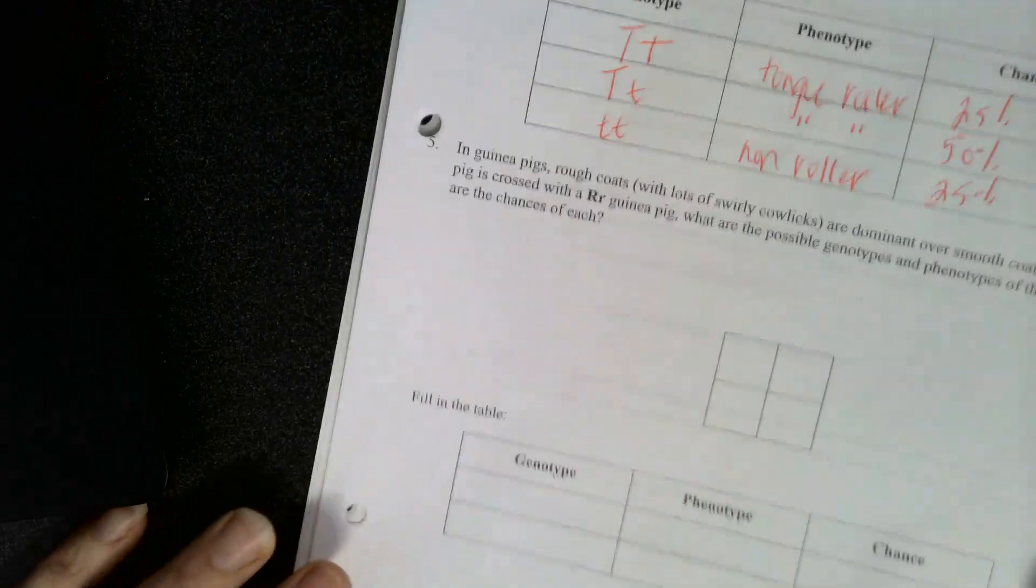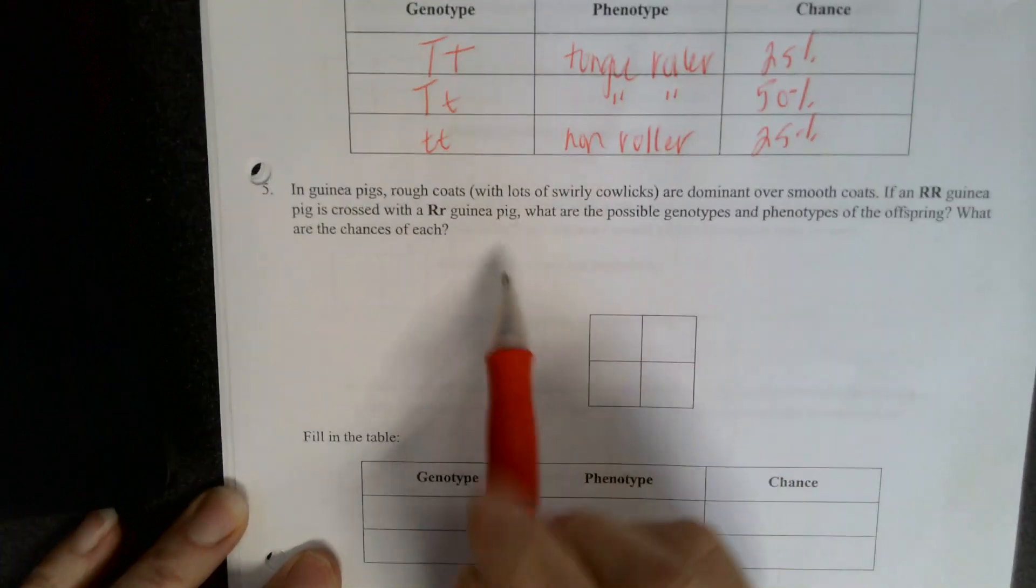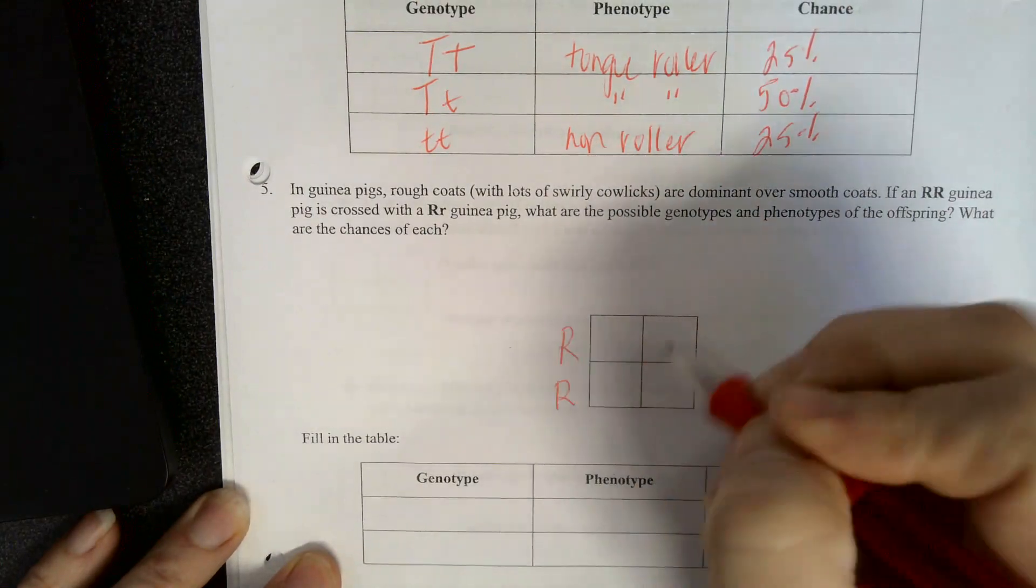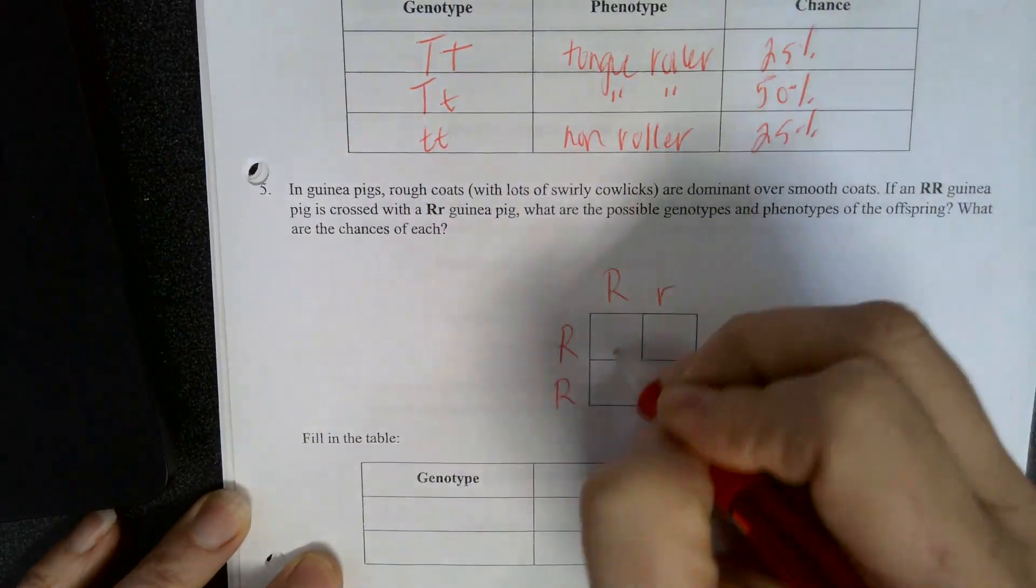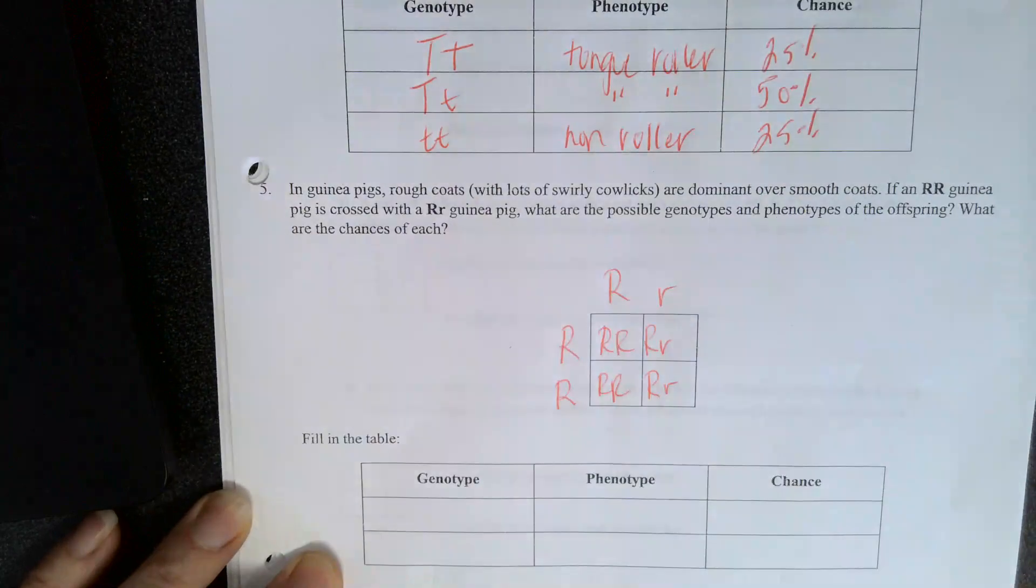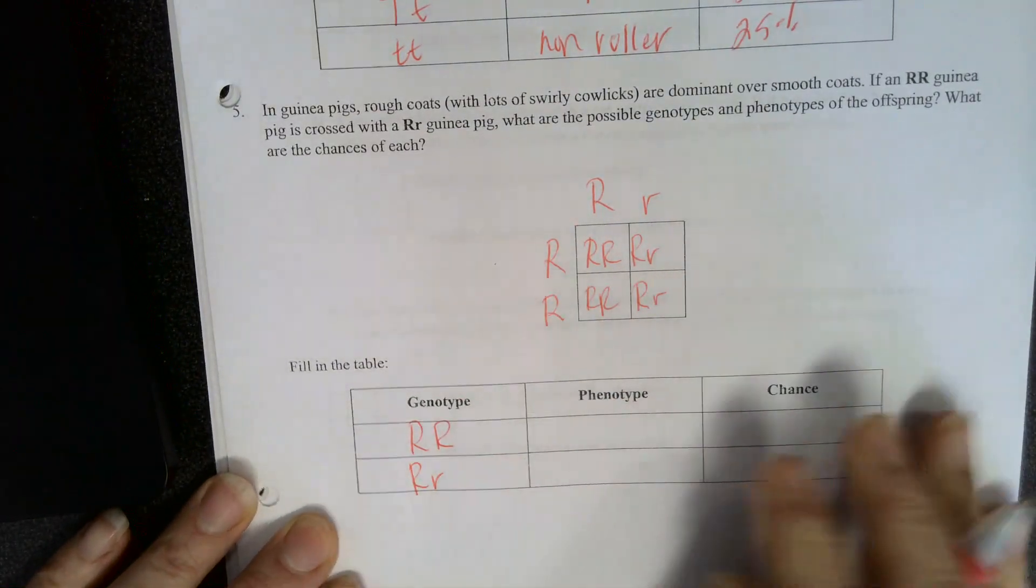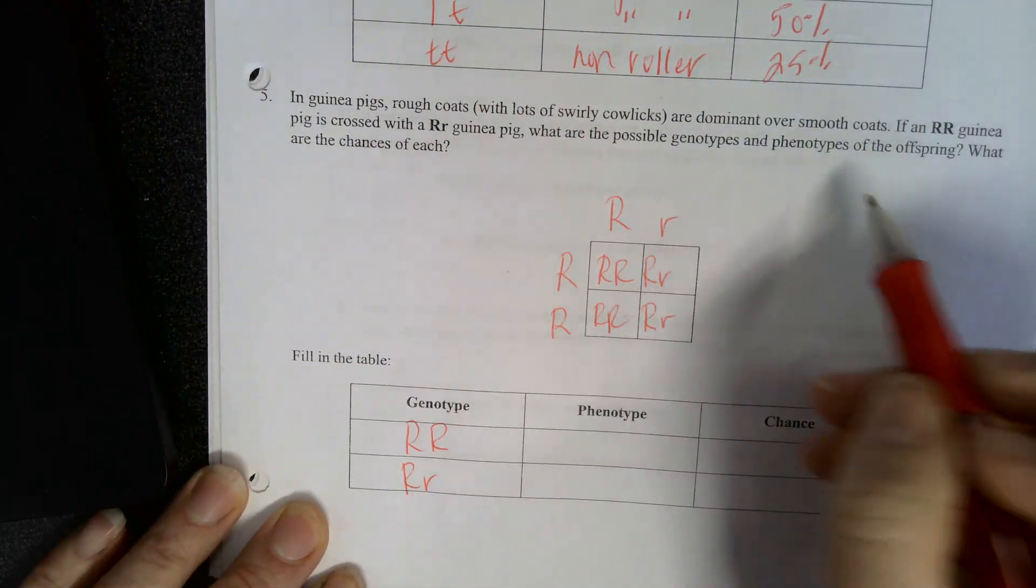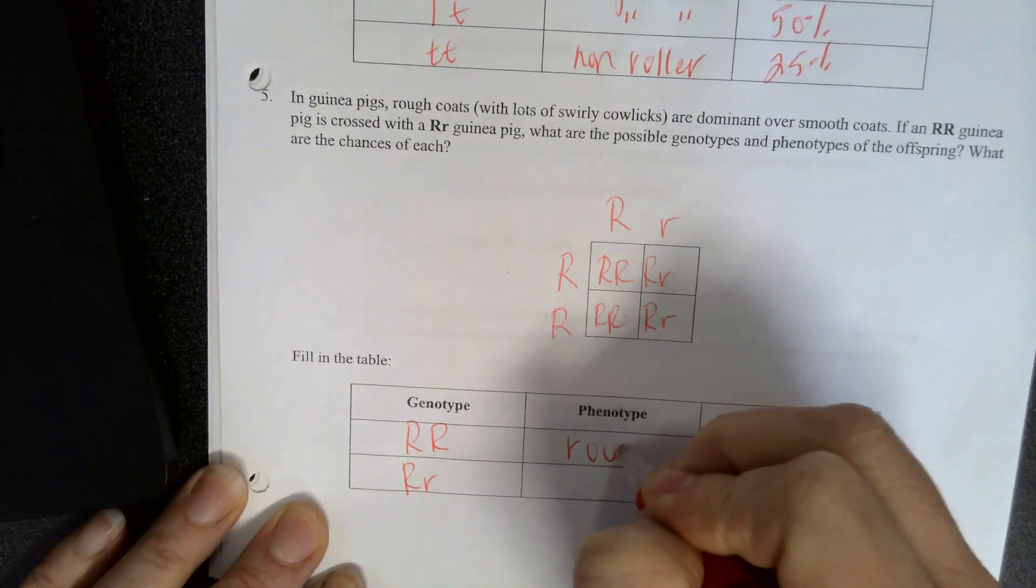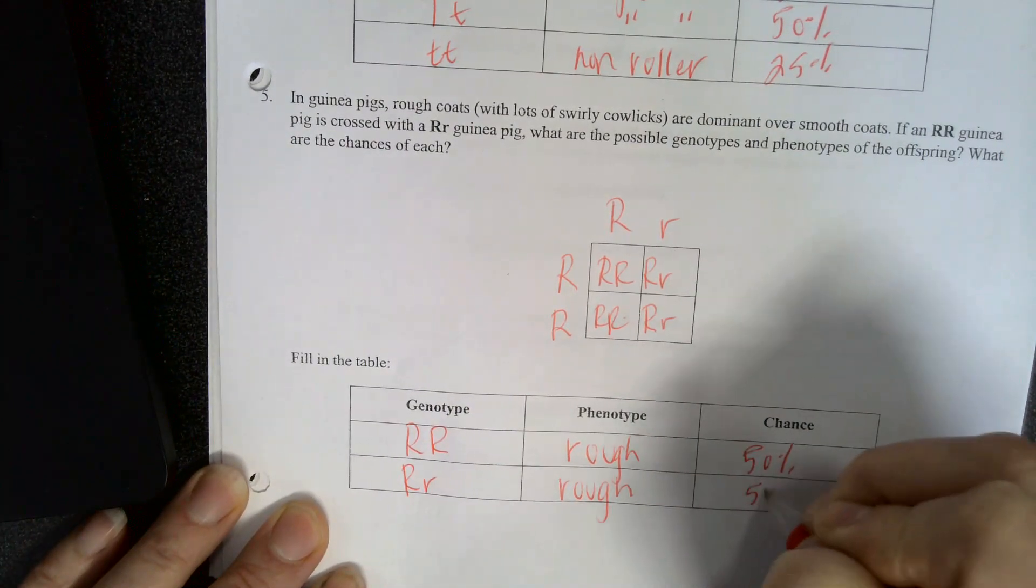Okay, here's another guinea pig problem. Let's see. Rough coats are dominant over smooth. So we got big R, big R, cross with a big R, little r. Okay, so we have two possible genotypes. This is going to happen. So this means rough coats are dominant over smooth. So this is rough. This is also rough. This is 50%, 50%.